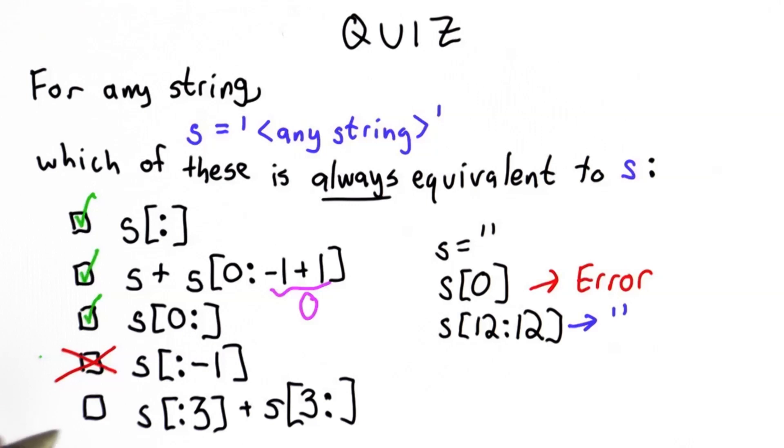So the final one is the most surprising, that this actually is always equivalent to s. It's equivalent even if s has fewer than three characters. The first part is selecting all the characters from the beginning up to position 3, not including position 3. And then we're concatenating that with all of the characters of s from position 3 to the end.